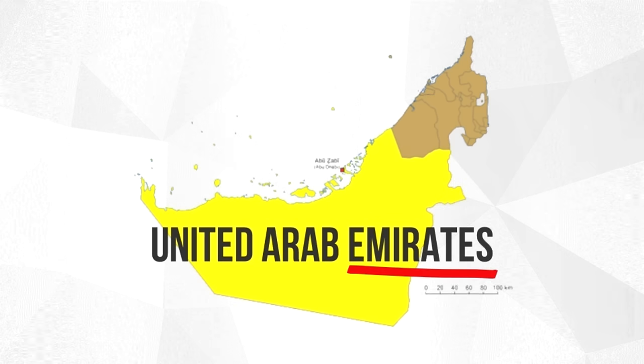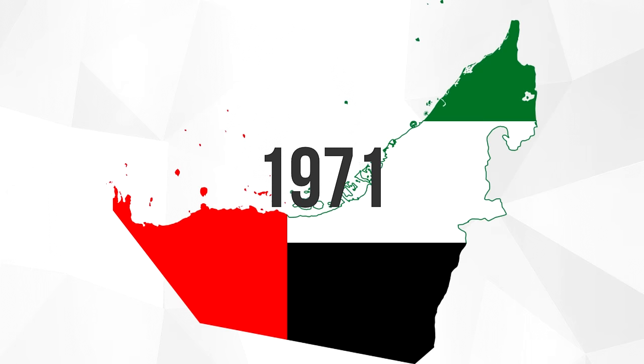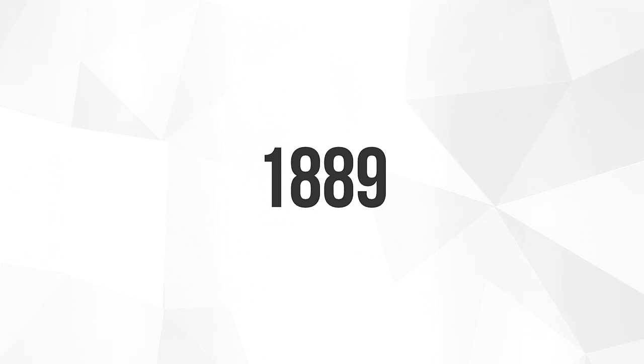But what is an Emirate and why are they united? How did they come to be and how do they function? To answer that, we need to go back to 1971 when the United Arab Emirates was formed. But to understand why it was formed, we need to further go back in time to the early 1800s.